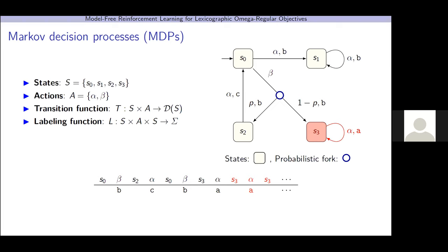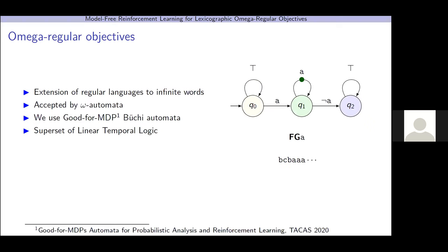So, what we can do is we can take a strategy for controlling the system, and we can have this get converted into a probability distribution over infinite strings. And now we compose properties about these infinite strings that we'd like to satisfy. So, we do this with omega regular objectives. Omega regular objectives are an extension of regular languages to infinite words, and are accepted by omega automata. The type of omega automata we use are good-for-MDP Büchi automata. Büchi means that the acceptance condition is that we see so-called accepting edges infinitely often.